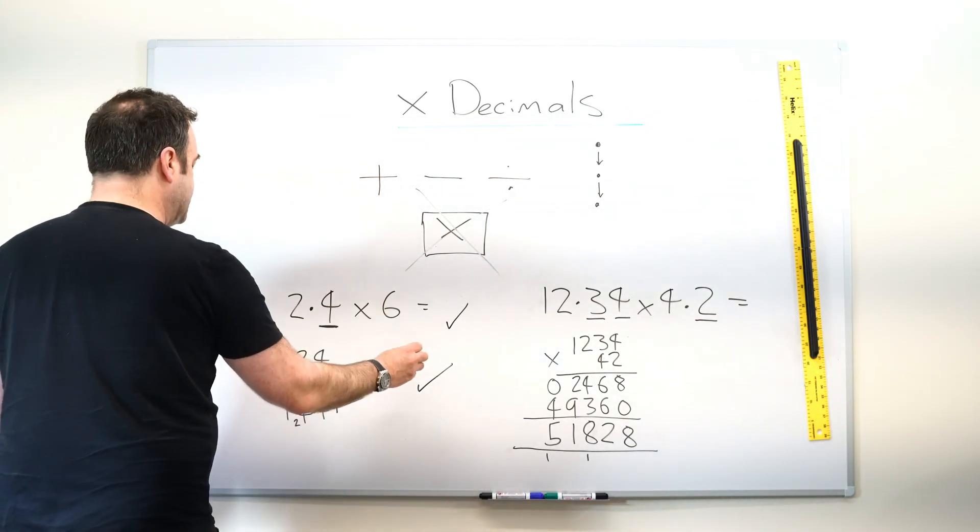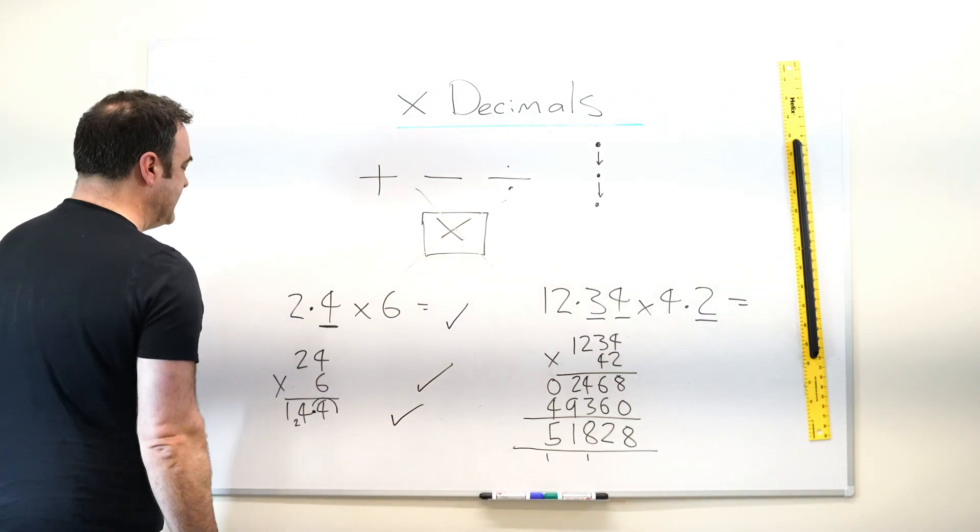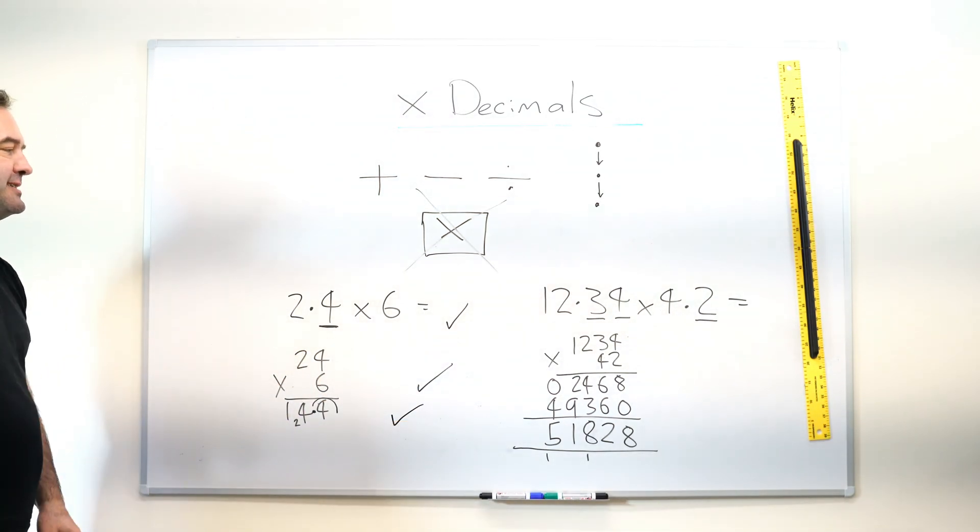So it's copy it out, write it out without, bounce it back in from the end by the number of decimal places in the whole question.